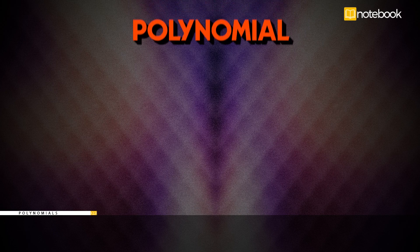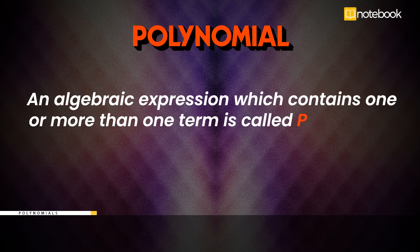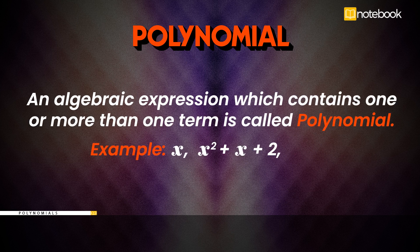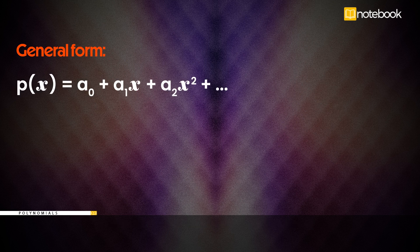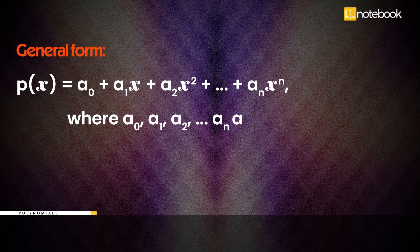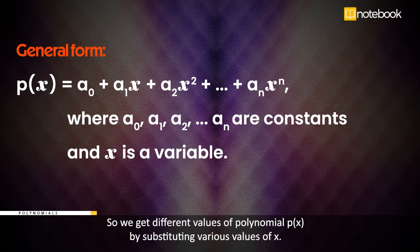A polynomial is an algebraic expression which contains one or more than one term. For example, x, x² + x + 2, and x³ + 5 are all polynomials. The general form of a polynomial is represented by p(x) = a₀ + a₁x + a₂x² + ... + aₙxⁿ, where a₀, a₁, a₂, ..., aₙ are constants and x is a variable. We get different values of the polynomial p(x) by substituting various values of x.